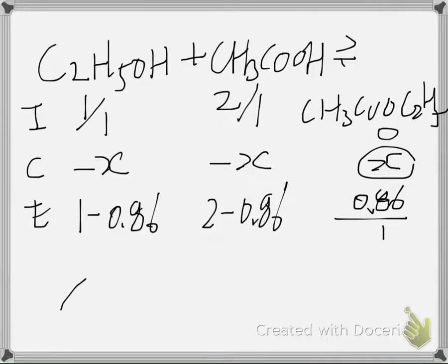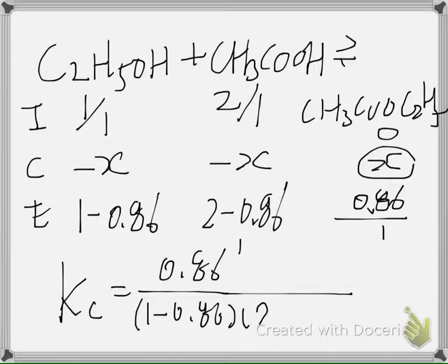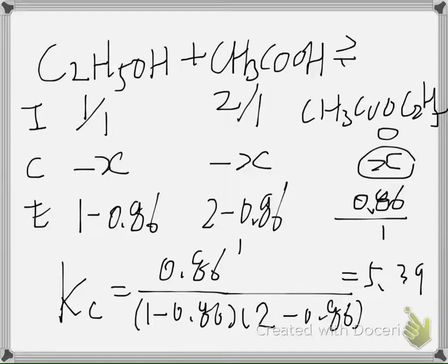Now we can calculate Kc. Plugging in the values: Kc = 0.86¹ / [(1 − 0.86) × (2 − 0.86)]. You can calculate this to be approximately 5.39, close to 5.4. So the answer is D.